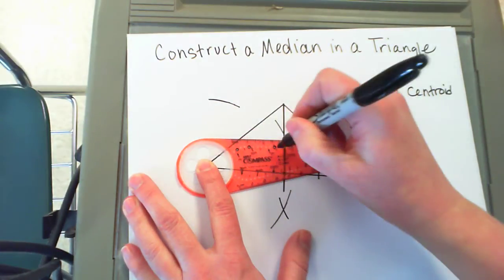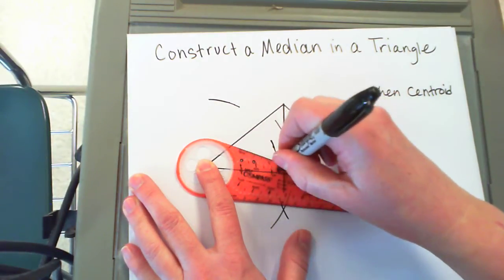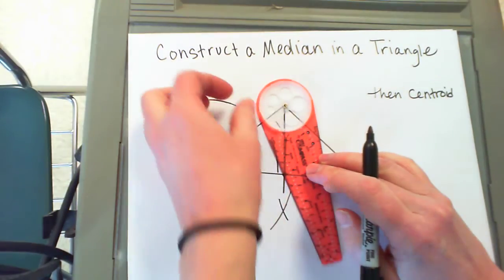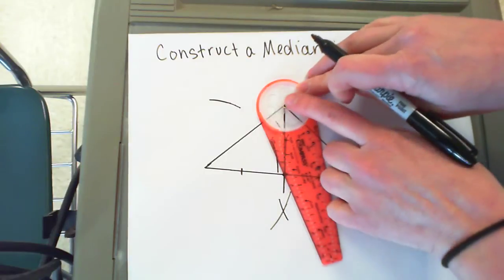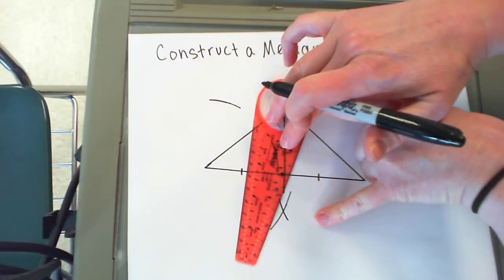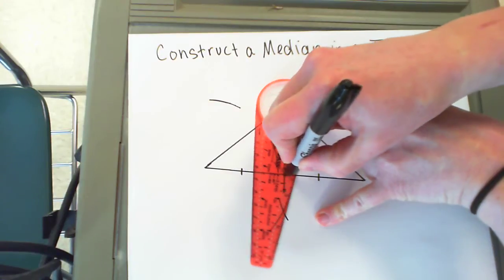Make an arch above and below, then you move your gold dot to the other endpoint. Then you make your arch above and below.